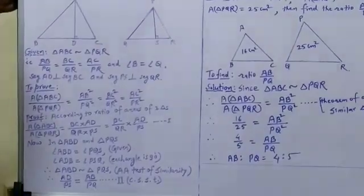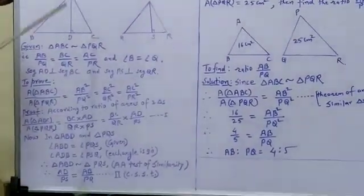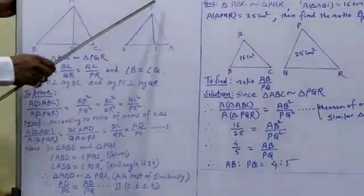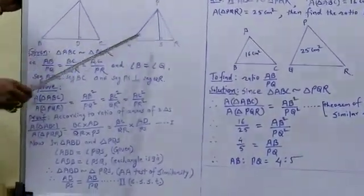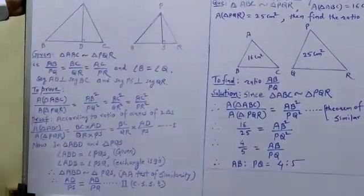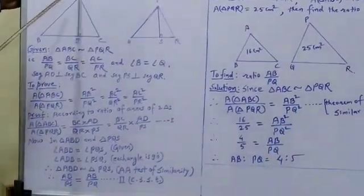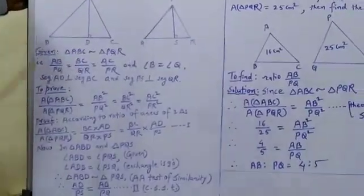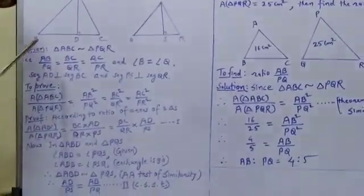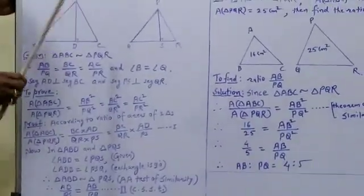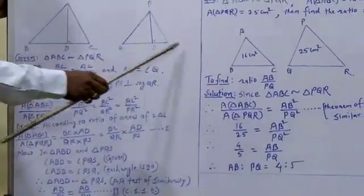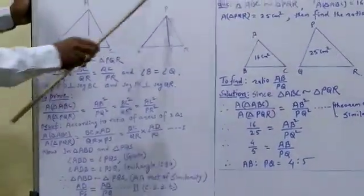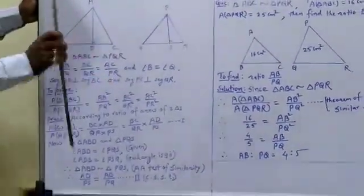To prove: area of triangle ABC upon area of triangle PQR equals AB square upon PQ square equals BC square upon QR square equals AC square upon PR square.